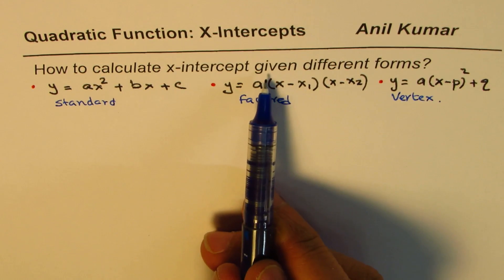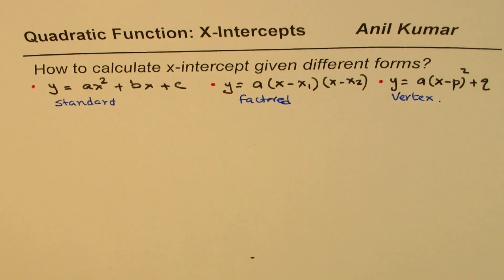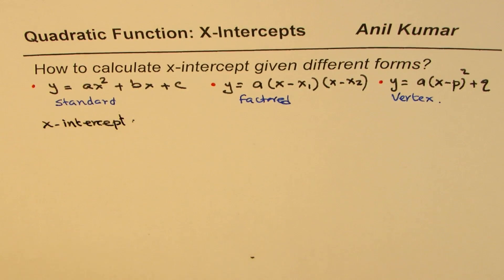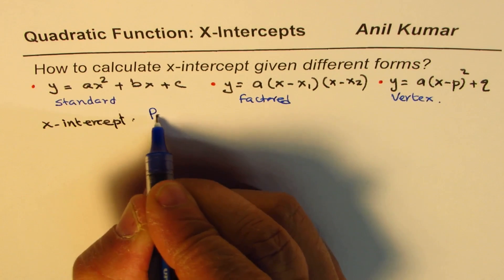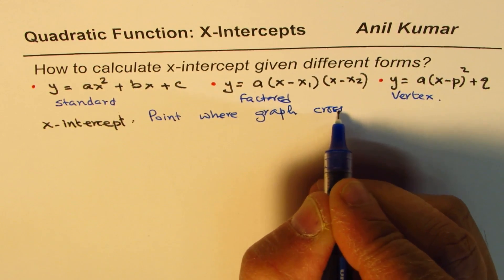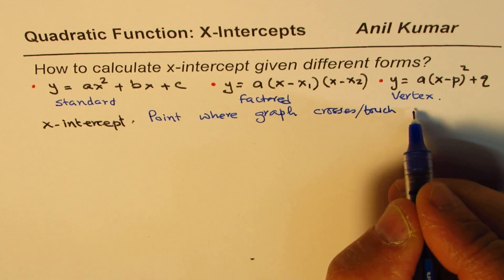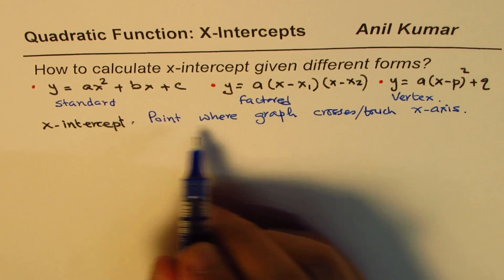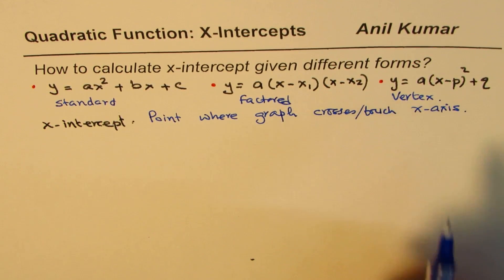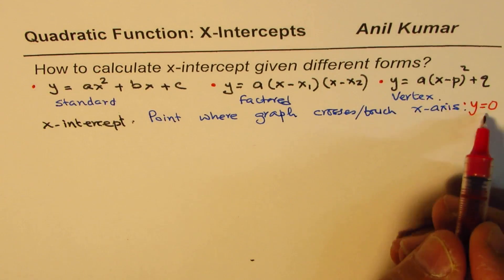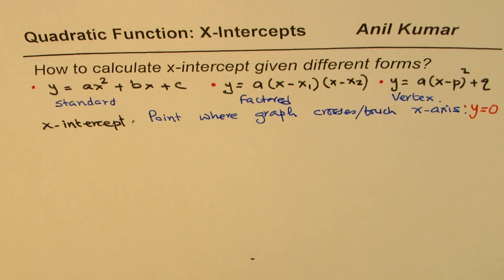We'll now see how to find the x-intercept given an equation in any of these forms. X-intercept means a point where the graph crosses or touches the x-axis. When it touches or crosses the x-axis, what is the value of y? At that point y is equal to 0. So at x-intercept, y equals 0 — that gives us the idea for finding the x-intercept.